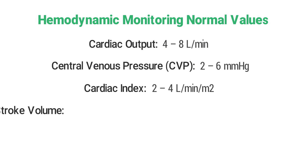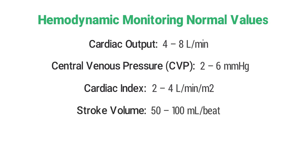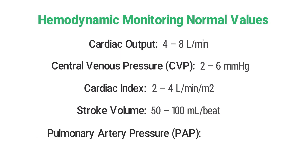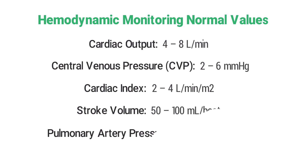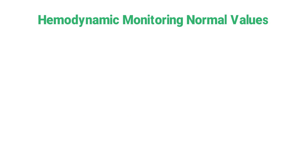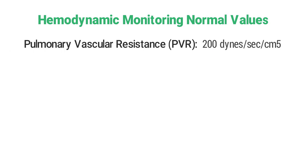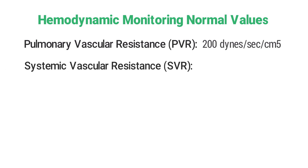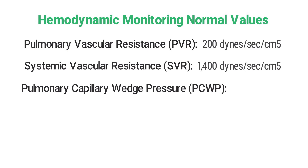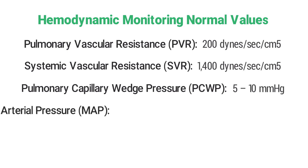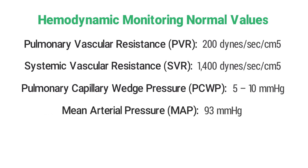The normal stroke volume is 50 to 100 milliliters per beat. The normal pulmonary artery pressure is 25 over 8 millimeters of mercury. The normal pulmonary vascular resistance is 200, and the normal systemic vascular resistance is 1400. The normal range for pulmonary capillary wedge pressure is five to ten millimeters of mercury, and the normal mean arterial pressure is 93 millimeters of mercury.